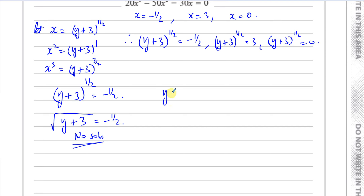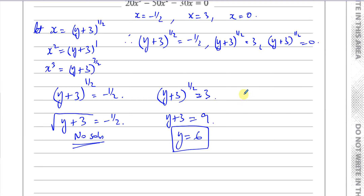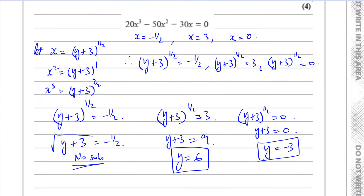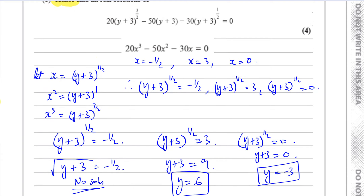For (y+3)^(1/2) = 3: that makes sense since the positive square root of something can equal 3. Squaring both sides gives y + 3 = 9, so y = 6. For (y+3)^(1/2) = 0: the positive square root of 0 is 0, so y + 3 = 0, giving y = −3. Therefore the two real solutions are y = 6 and y = −3.